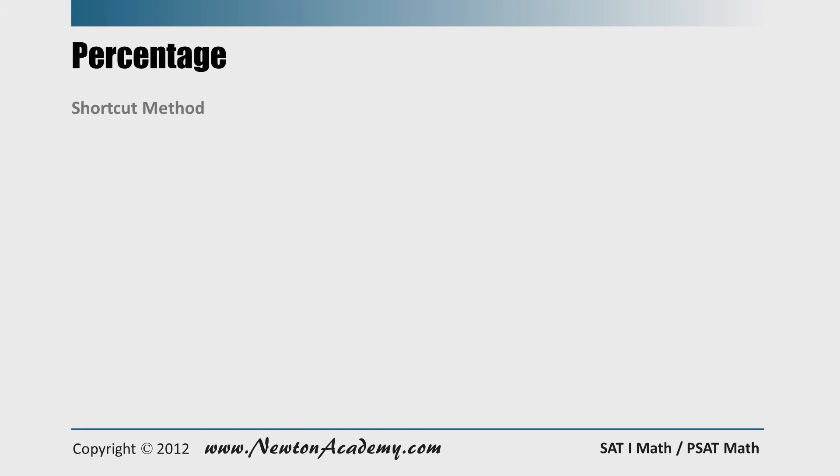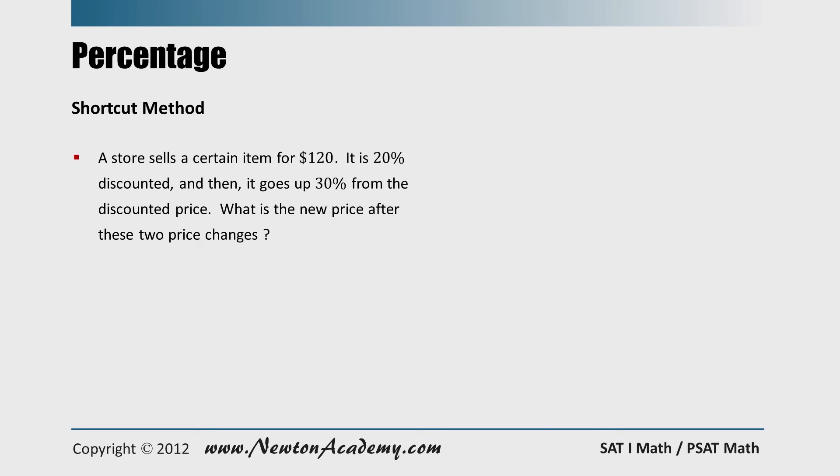Let's practice what we just learned with the following two problems. A store sells a certain item for $120, and it is 20 percent discounted, and then it goes up 30 percent from the discounted price. What is the new price after these two price changes? Then, 120 times 0.8 gives you the discounted price, and it goes up 30 percent from this new discounted price. So we have this whole thing times 1.3. So the new price after two price changes is $124.80.